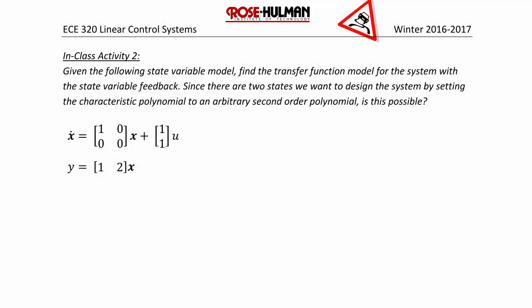In class activity two: given the following state variable model, find the transfer function model for the system with state variable feedback. Since there are two states, we want to design the system by setting the characteristic polynomial to an arbitrary second-order polynomial. Is this possible?